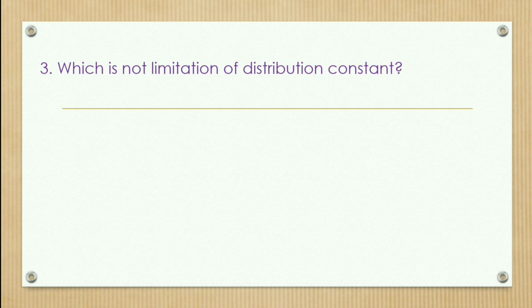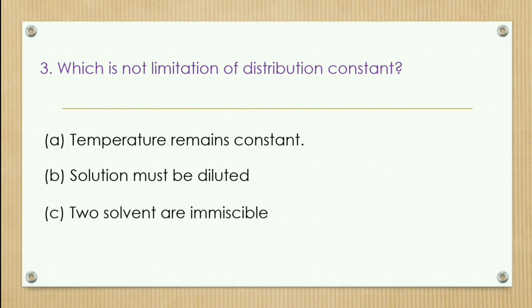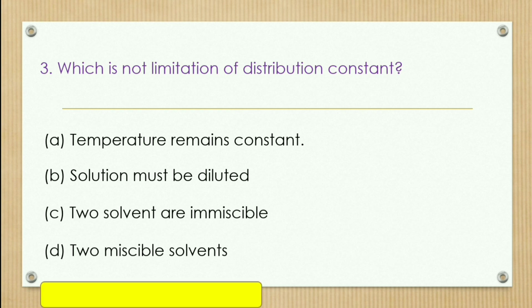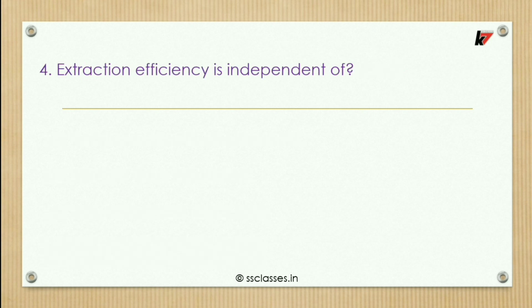Third question: which is NOT a limitation of distribution constant D? Options are: temperature remains constant, or solution must be diluted, or two solvents are immiscible, or two miscible solvents. The correct option is D — two miscible solvents — because it must be immiscible, not miscible solvents.